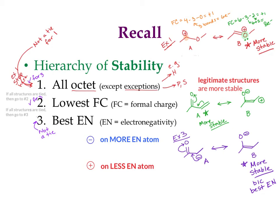Before moving on, there's actually a fourth item in this hierarchy — a special case. We're going to talk about it on the next slide. So if you get through rules one through three and there's still a tie, there's one more rule to watch for.